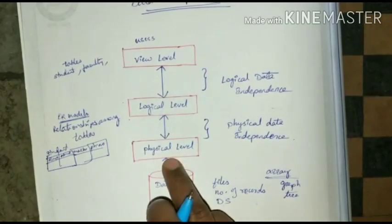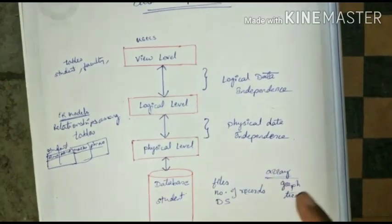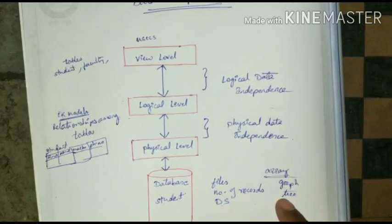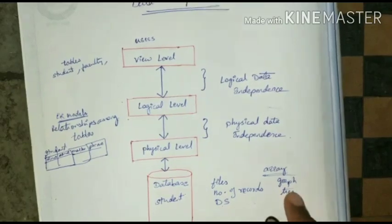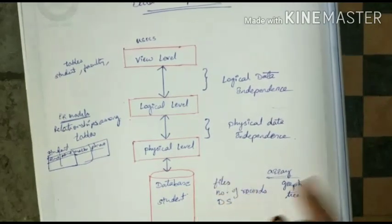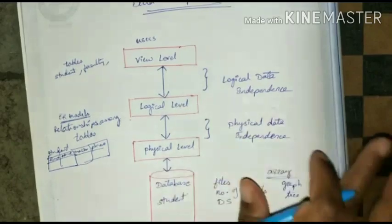To summarize: logical data independence means changes at the logical level do not affect the view level. Physical data independence means changes at the physical level — like data structure changes or number of records per file changes — do not affect the logical level.